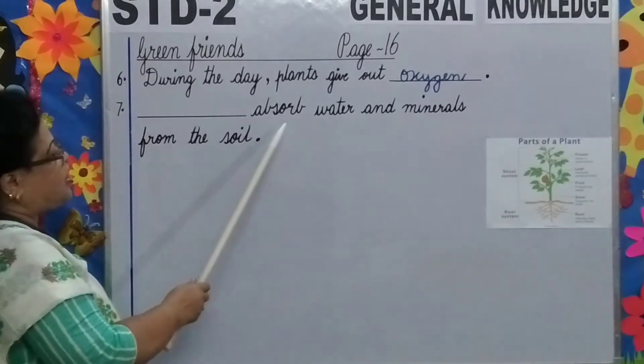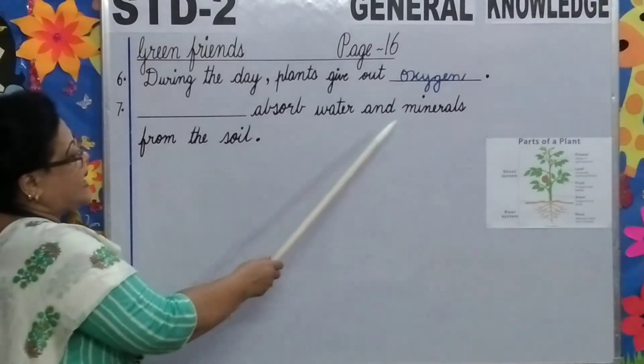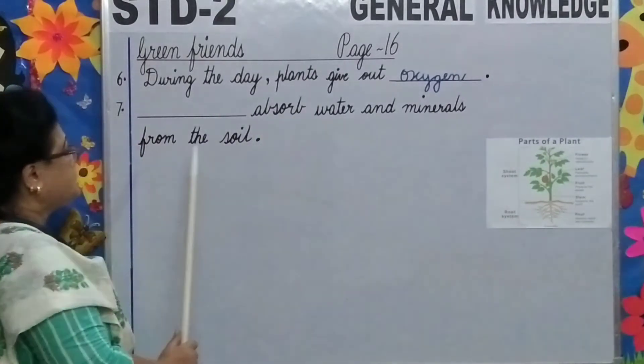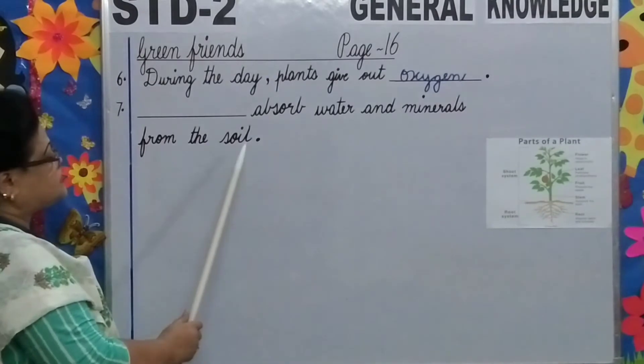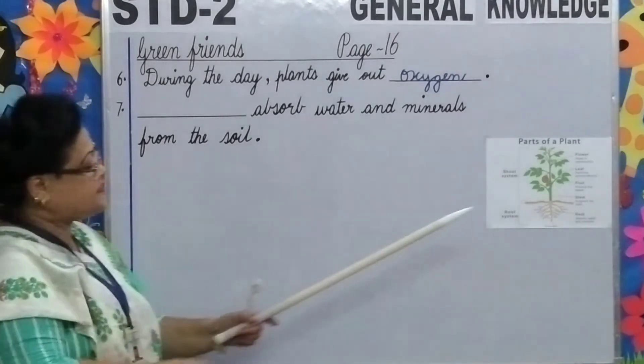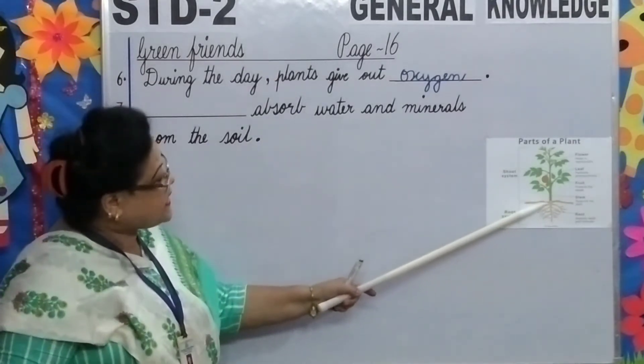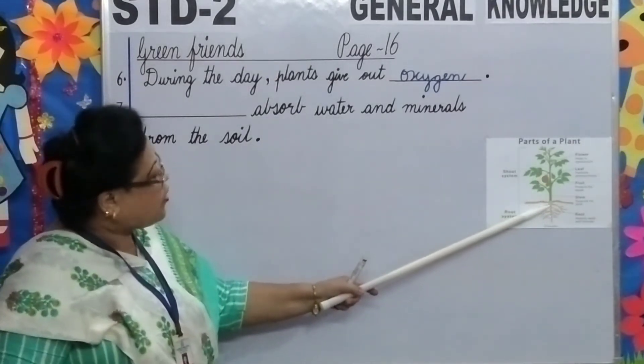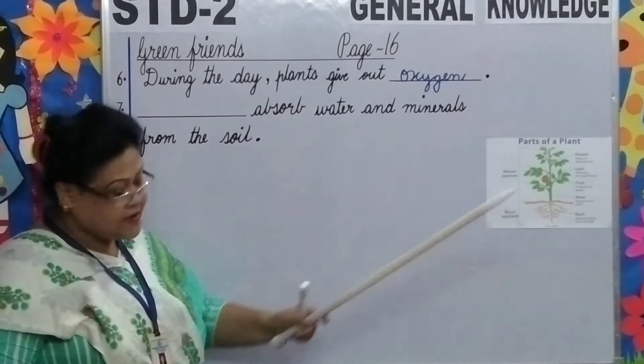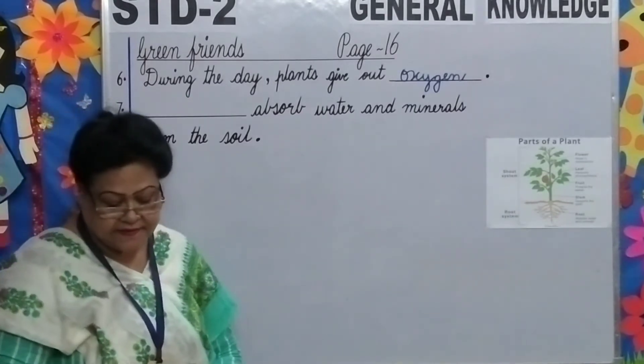Number 7: Blank absorbs water and minerals from the soil. Look at this picture, children. What absorbs water and minerals from the soil? Roots.